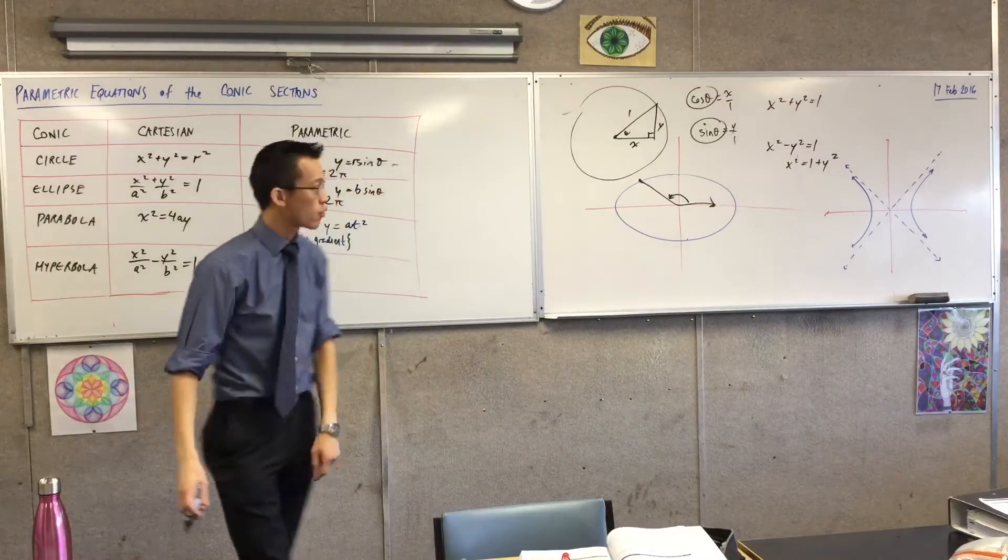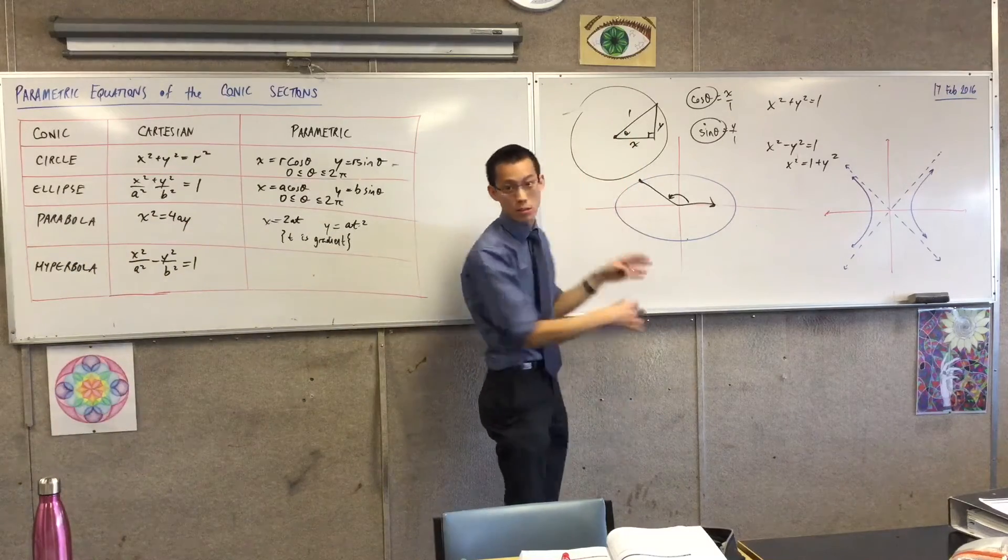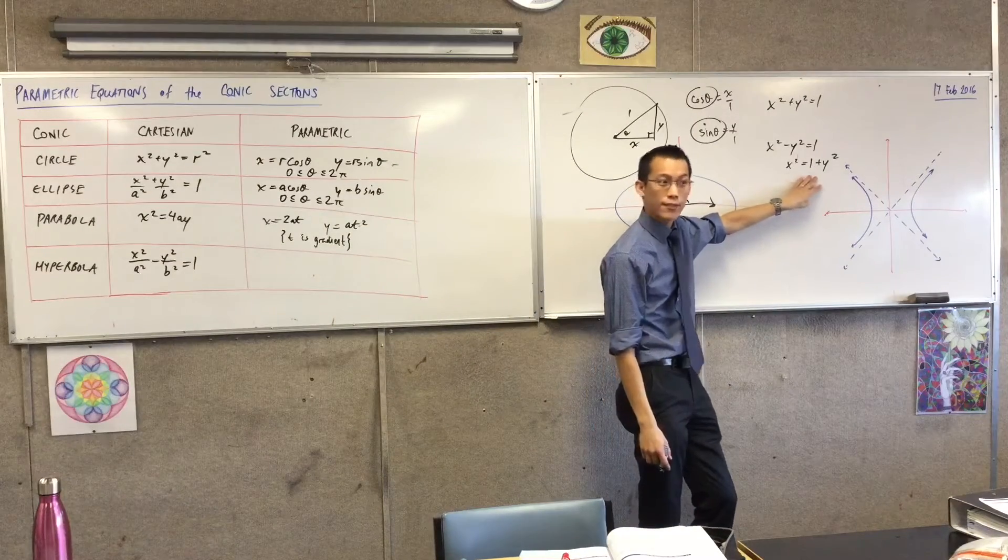Now I have a right-angled triangle. I can form a right-angled triangle kind of like this one. It won't be like this because I'm not in a circle anymore.